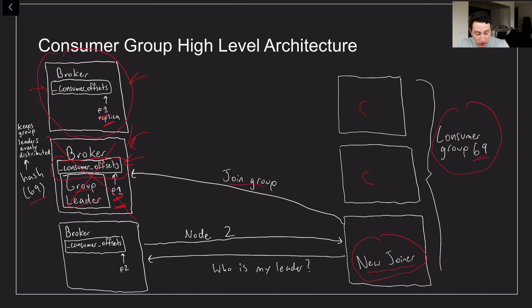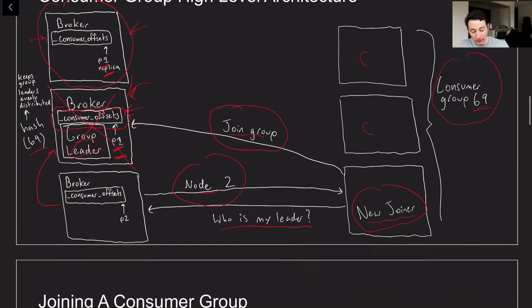But anyway when the new joiner comes along it's going to say hey I want to join the group. So the first thing that it's going to do is go to just any node in the cluster and then say who is my leader. The random node in the cluster is going to use that hashing logic to basically say oh it's actually going to be this guy over here. So go ahead and reach out to him. So then he's going to do that and say I want to join the group.